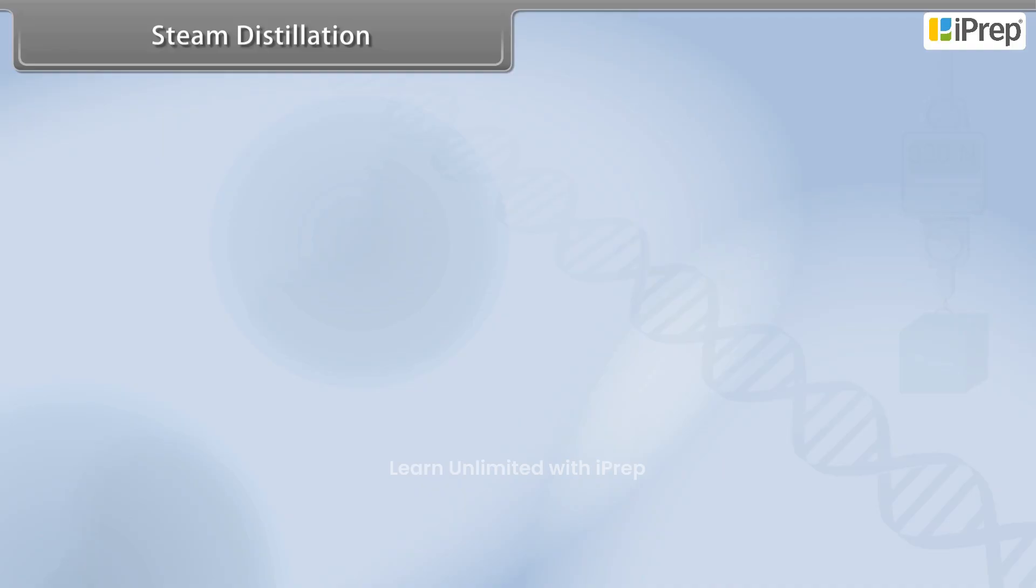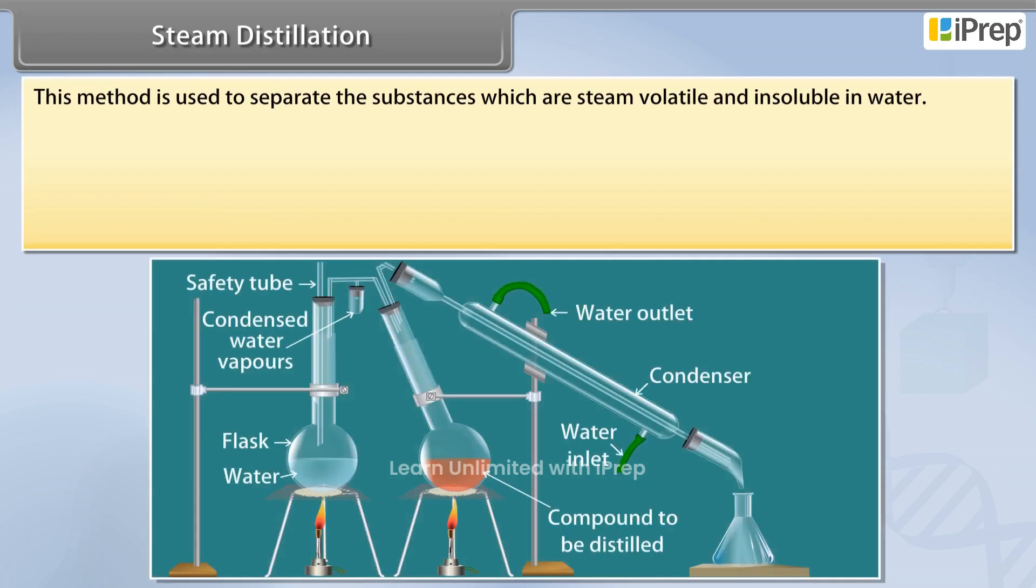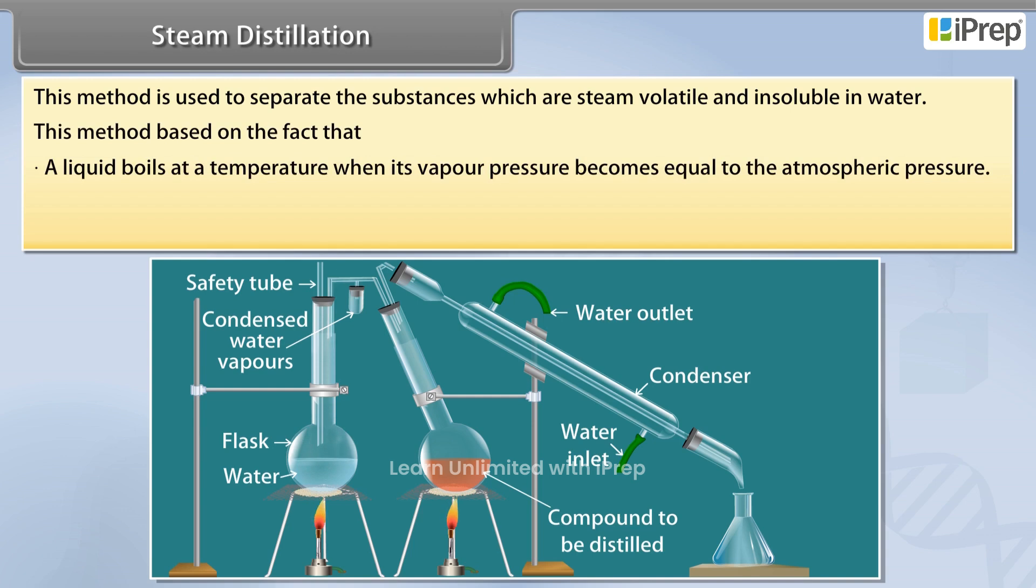Steam distillation: This method is used to separate substances which are steam volatile and insoluble in water. This method is based on the fact that a liquid boils at a temperature when its vapor pressure becomes equal to the atmospheric pressure.